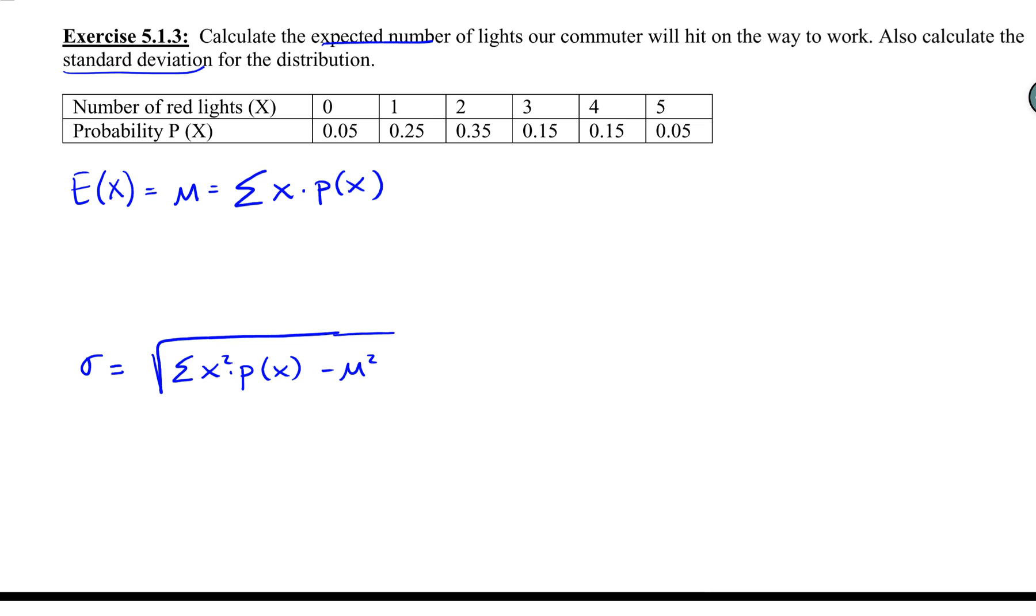The expected number is the same thing as our expected value. I've written down the formula: our expected value or mean is the summation of every possibility times the probability of that possibility happening.